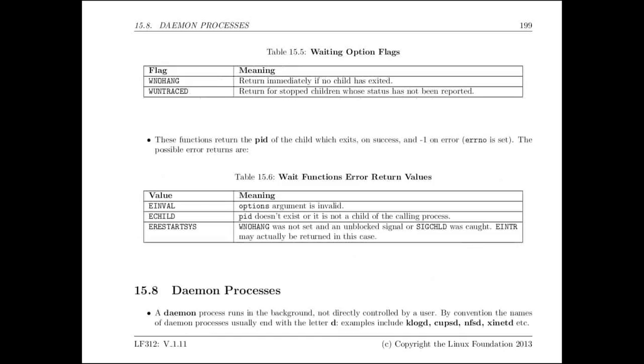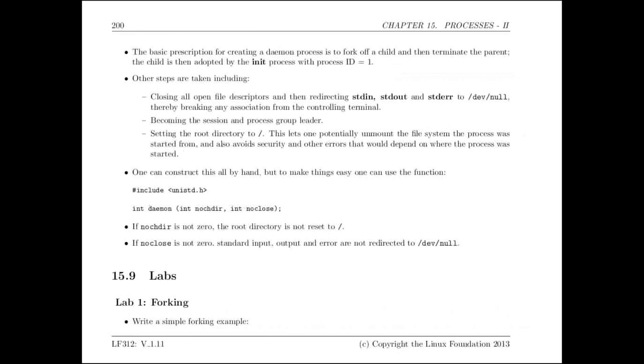And then I guess the last section in this section is on what are called daemon or daemon processes. It's a variation on fork and exec where you create a child process which has rather limited set of privileges. This is often done for background services, etc. Because you never want them to have more privilege than they absolutely need for security and stability reasons. And so we show people how to set up daemon processes, etc. And we also have labs that do that.